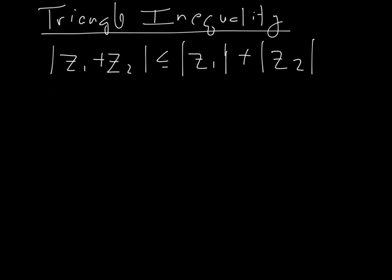We're going to prove the triangle inequality: that the absolute value of z1 plus z2 is always less than or equal to the absolute value of z1 plus the absolute value of z2. This is a standard fact in calculus and in real analysis. The proof for complex analysis is pretty similar, but there are a few subtleties we need to pay attention to.